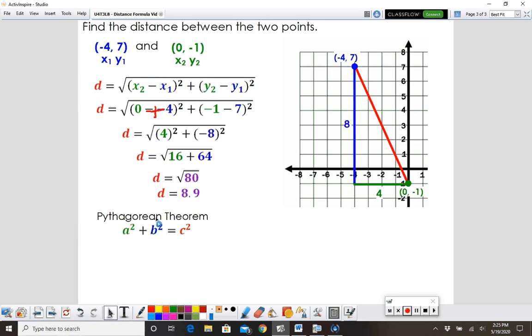If we wanted to use our Pythagorean theorem, again, this only works if we have this grid to work with. We would have a side of 8 and a side of 4. So 4 squared plus 8 squared equals c squared. We're going to get 16 plus 64 equals c squared. So that's 80.